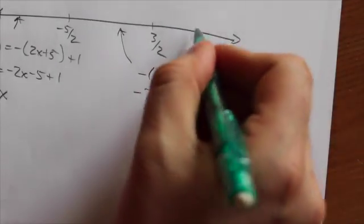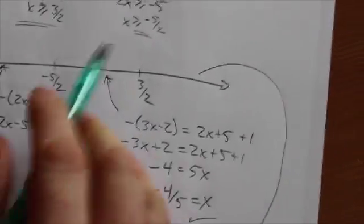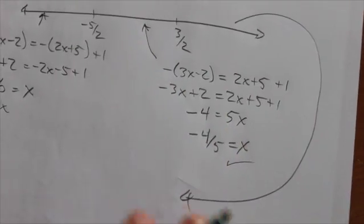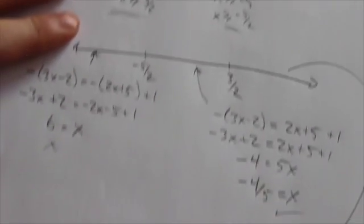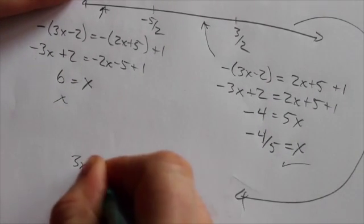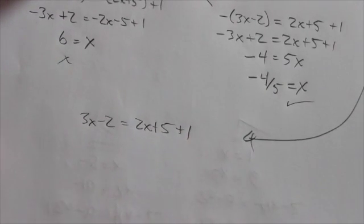Now the very last interval we're going to look at is this one right here. And I got to come down over here and I got to do the work down here. Now when we're to the right of 3 halves, both of these expressions up in the original function here will be positive. So the absolute value is just going to leave them both alone. This is all we're going to be left with here.